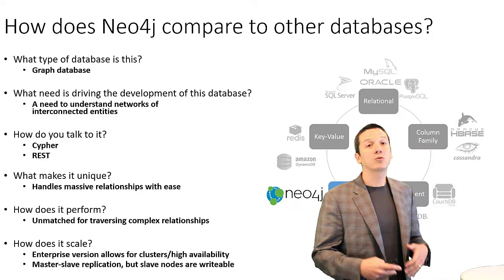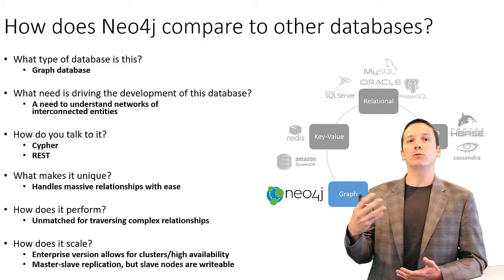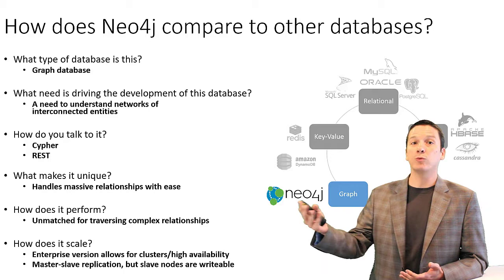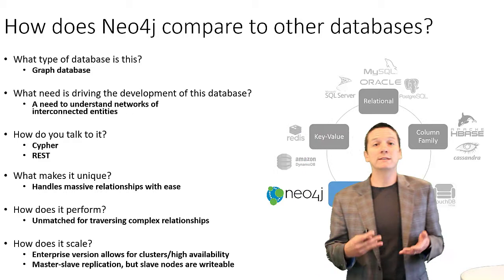As we're going to see in the upcoming videos, we talk to Neo4j using a language called Cypher. There's also an open version of Cypher called OpenCypher that can be used to communicate with other types of graph databases as well. As we'll demonstrate in next week's videos, we can also interact with Neo4j using a REST API, similar to the way we interacted with CouchDB.